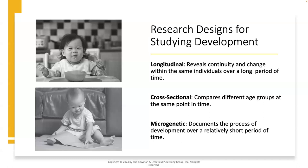Another example would be the development of infants' interactions with books and their reading ability. Cross-sectional research compares different age groups at the same point in time — for example, the ability of 12, 18, and 24-month-olds to imitate another person's actions. And then there is microgenetic research, which documents the process of development over a relatively short period of time — for example, the development of self-feeding over a period of weeks and months.